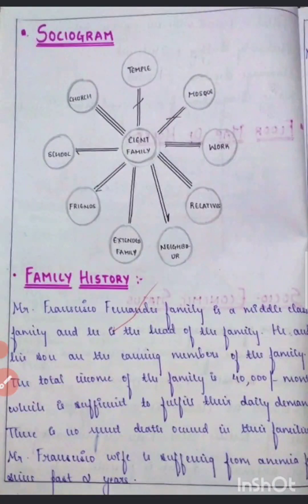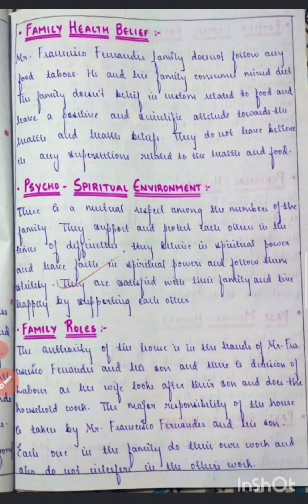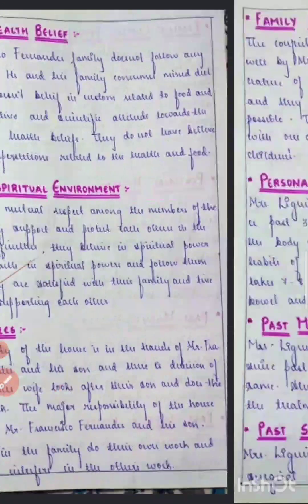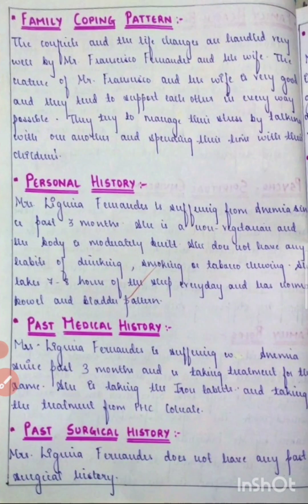Then comes the socioeconomic status, and you'll have to draw the sociogram showing how the client's relationship is with family members. Then mention the family history, family health beliefs, psycho-spiritual environment, and family roles.